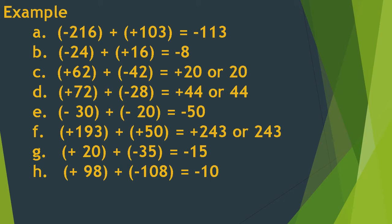Letter D: positive 72 plus negative 28 — the answer is positive 44. The greater number is 72 and its sign is positive, so the answer is positive 44.